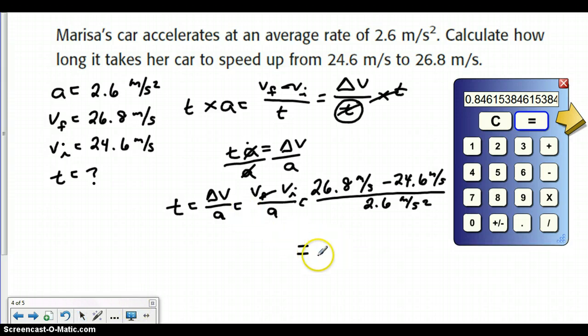So now we have our time equals 0.846 seconds. We have about 3 significant figures, so we're going to go with those. And we're just going to box our answers. And we are done in that case.